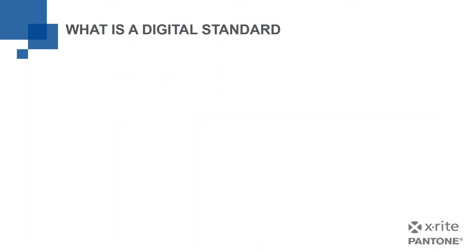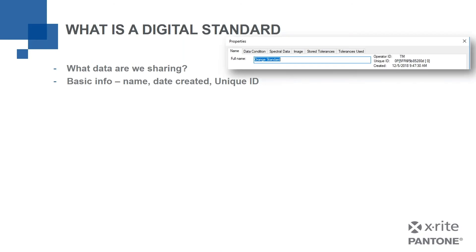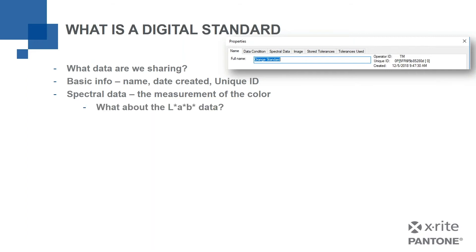So it's very important that we're all shooting for the same target, and a digital standard helps us do that. A digital standard is a number of things. It's about what data we're sharing — basic information like a name, the date it was created, even a unique ID. If your measurement has that same unique ID, we can guarantee that both of us are using the exact same color standard. It's about the spectral data, which is the measurement of the color.